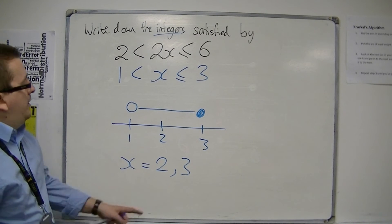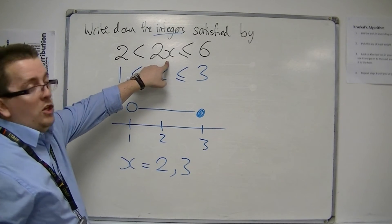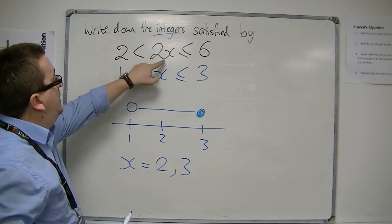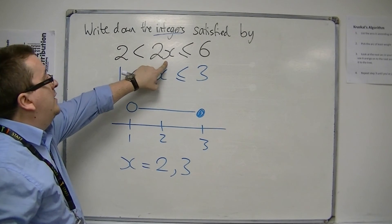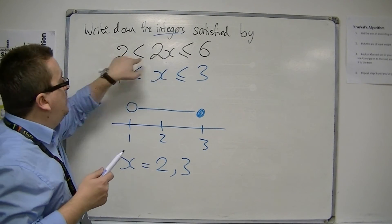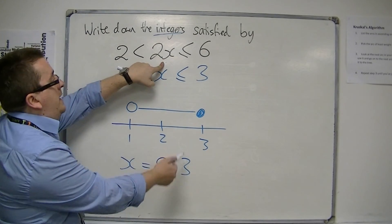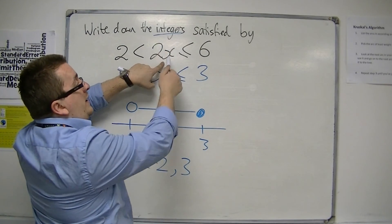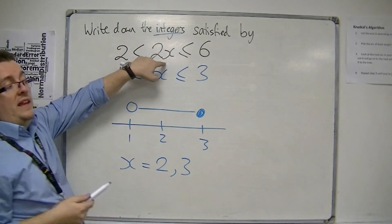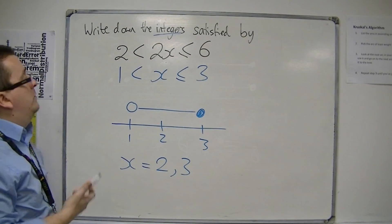And that makes sense, because when x is 1, I get 2 lots of 1, which is 2, that's not included. When x is 2, I get 2 lots of 2, which is 4, which is between 2 and 6, and when x is 3, I get 2 lots of 3, which is 6, which is allowed, because that's the end number of the inequality.